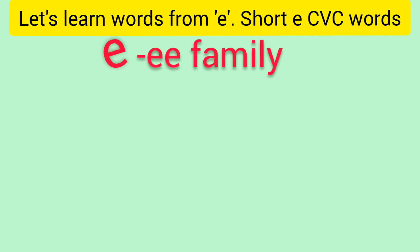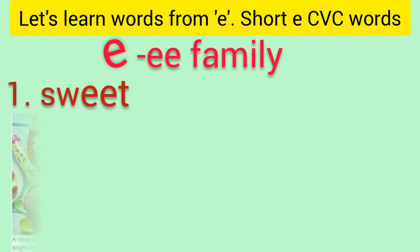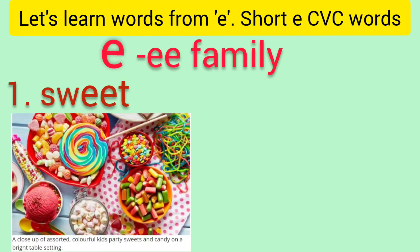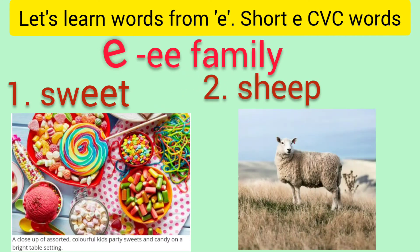Next family is the double E family. Number one is S-W-EE-T: sweet. Look at this assortment of colorful kids' party sweets and candies. Number two is S-H-EE-P: sheep.